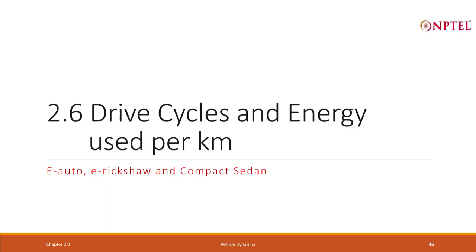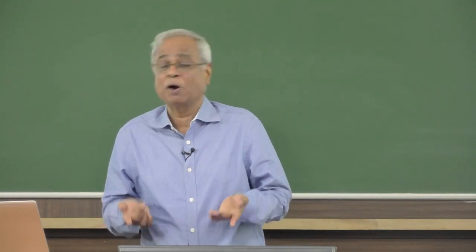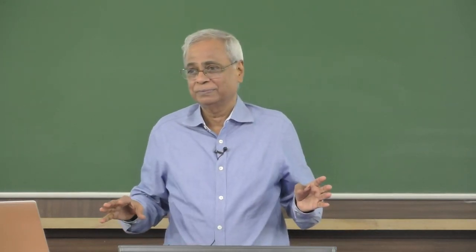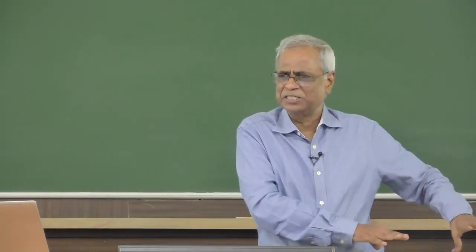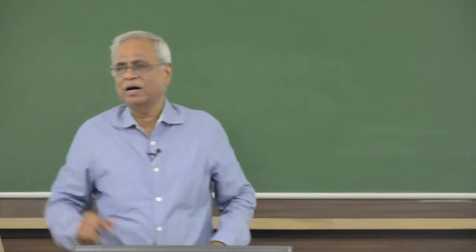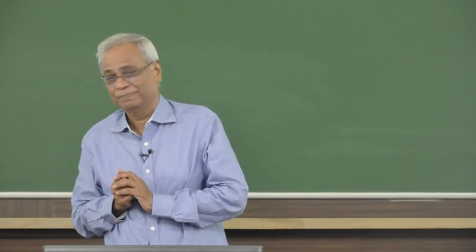This is where I will stop, but in the next class I am going to talk about E-auto, E-cycle, E-Rickshaw, and compact sedan — pretty much repeating what I did today but with slightly different numbers, so you will get a feel for these three vehicles as well. The drive cycle may or may not change. I will do it for E-auto first, then for E-Rickshaw, and then for a compact sedan.